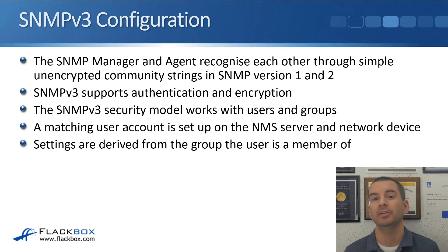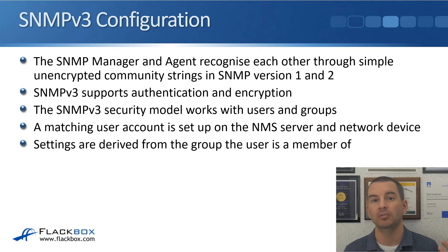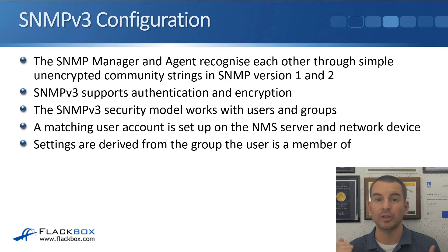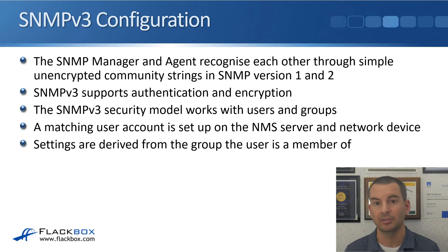With SNMP version 3, the security model uses users and groups. We configure a user on the router or switch, and we configure a matching user on the NMS server — that's how they recognize each other. Most of the settings are configured at the group level, and those settings are applied to the user depending on which group it's in.